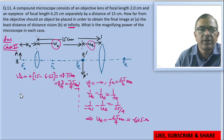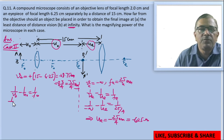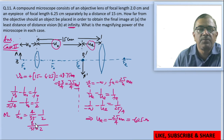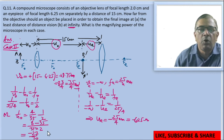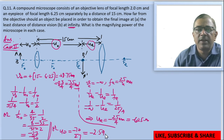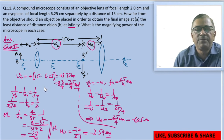Using the lens formula for the objective lens in Case 2: 1 by v_o minus 1 by u_o equals 1 by f_o. With v_o equals 35 by 4 and f_o equals 2, we get 1 by u_o equals 4 by 35 minus 1 by 2. Taking 70 as LCM: 1 by u_o equals (8 minus 35) by 70, which equals minus 27 by 70.